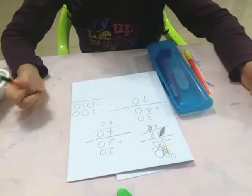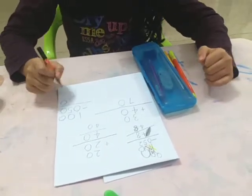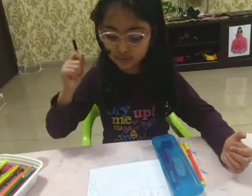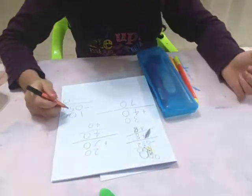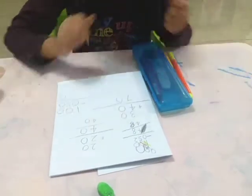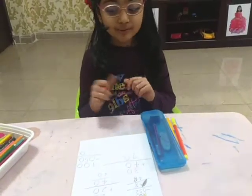Now, 0 minus 0 is equal to 0. 0 plus 0 is equal to 0 or zero minus zero is equal to zero. They both are the same. Now let's do zero minus five. Now oh we cannot do it. Let's borrow the ten.